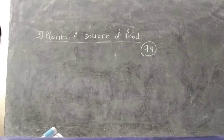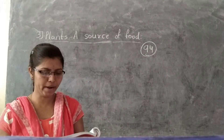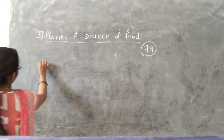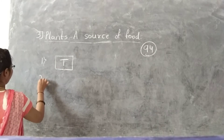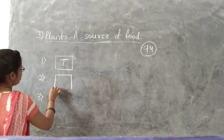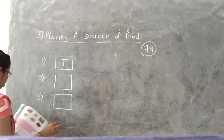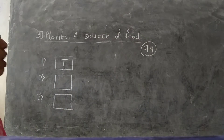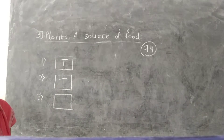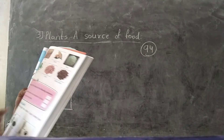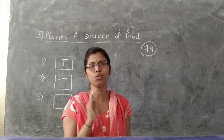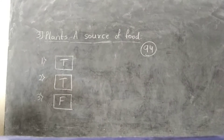Write true or false for the following statements. First: rice is a cereal — that is true. Second: ground peas and kidney peas are examples of pulses — that is true. Third: all plants give us cereals and pulses — no, only some plants give cereals and pulses, so that is false. Write these answers in your textbook on page number 95.